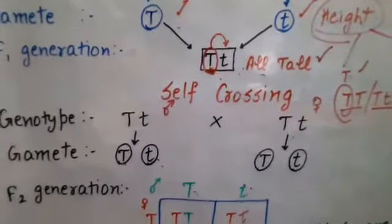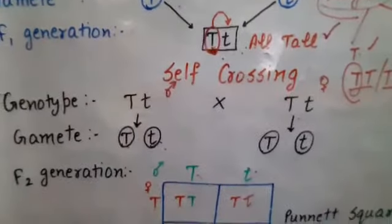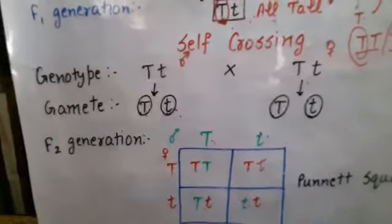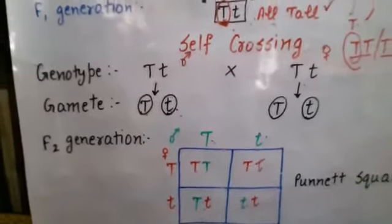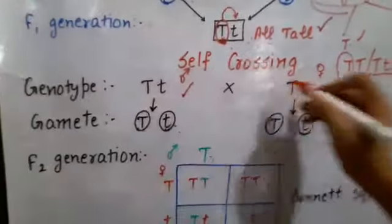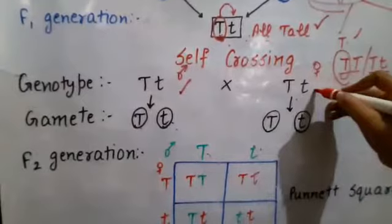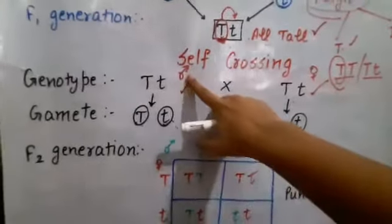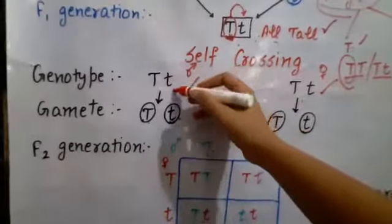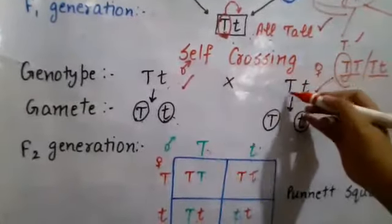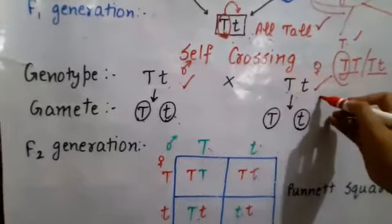Now what we have to do is self-crossing. Self-crossing is the crossing between the same individuals. Here you can see there is a crossing between Tt and Tt — we have taken male also as Tt and female also as Tt.